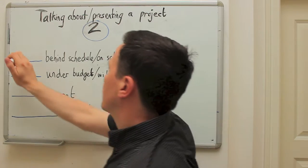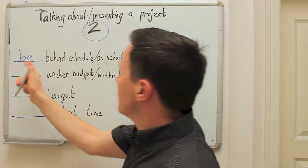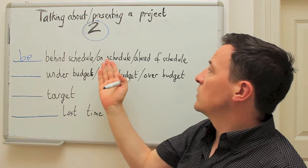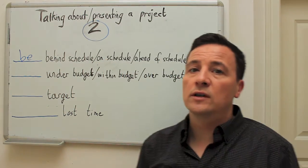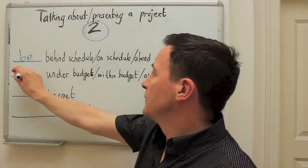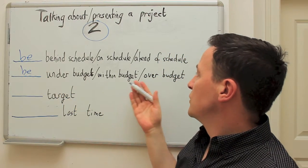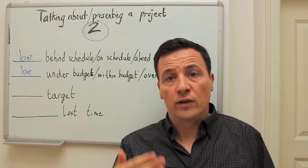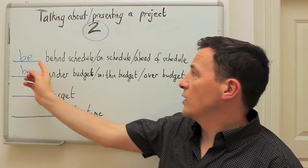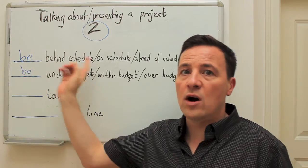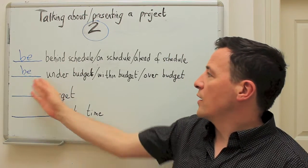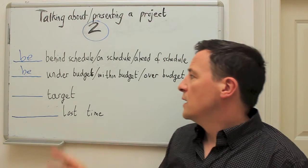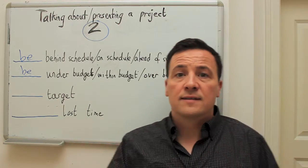The first two verbs are quite easy — it's the verb 'be.' You can be behind schedule, on schedule, or ahead of schedule. You can be under budget, within budget, or over budget. Your boss or client could ask you: are you behind schedule? Are you on schedule? Are you within budget, or are you over budget — are you spending too much money?